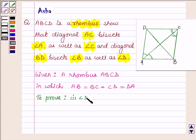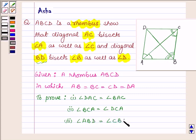Also diagonal BD bisects angle B as well as D. So third we have to prove that angle ABD is equal to angle CBD. And lastly that angle ADB is equal to angle CDB.